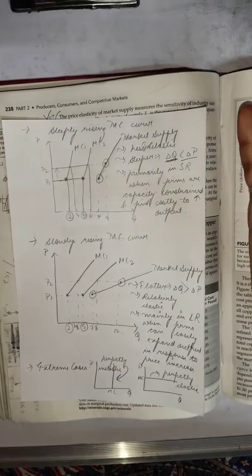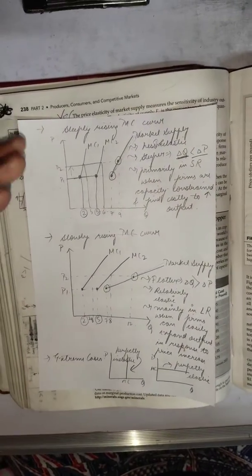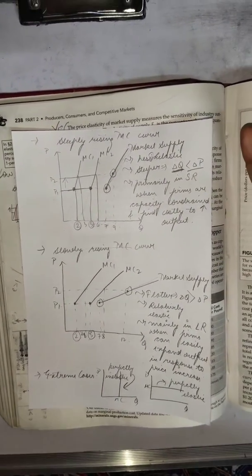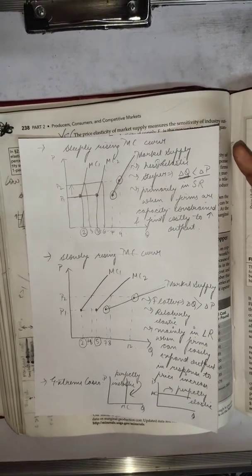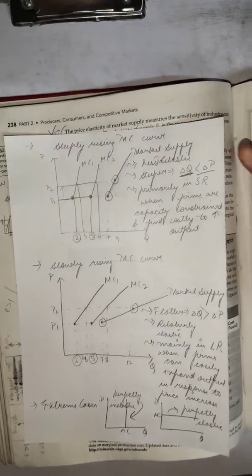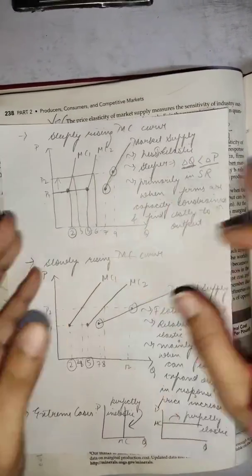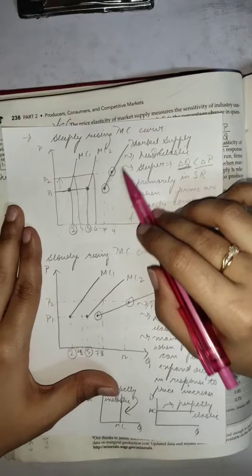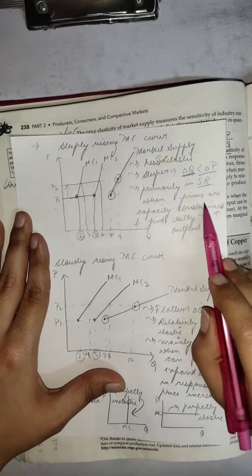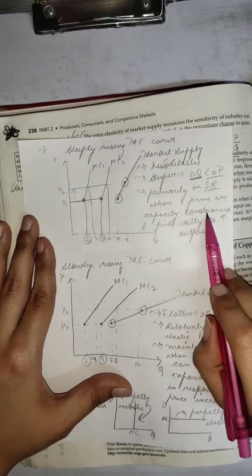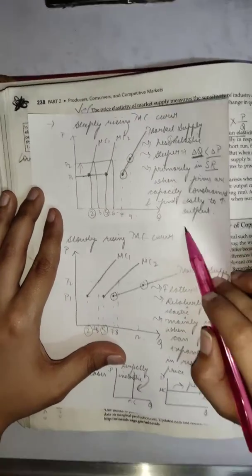In short run when firms are too packed, they do not have enough resources to expand in response to increased prices. What will happen? Input prices will bid up and also they will have to squeeze the quantity produced. This particular scenario of a steep market supply curve or a less responsive supply curve is usually a short run scenario because firms are capacity constrained and find costly to increase output.